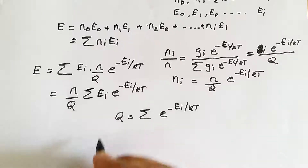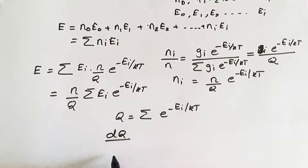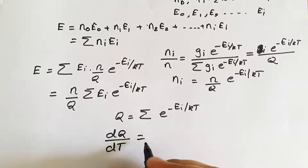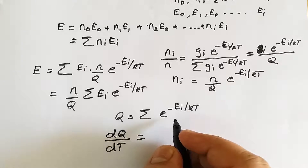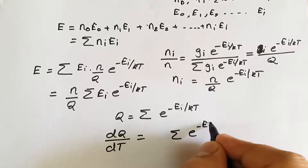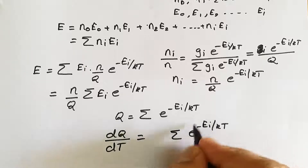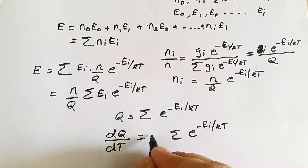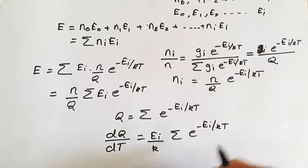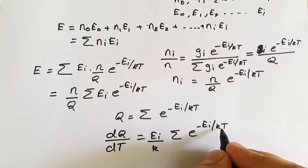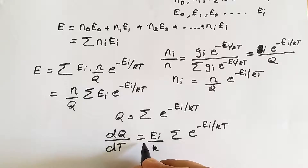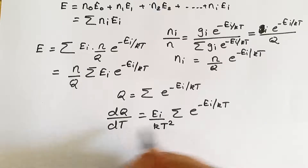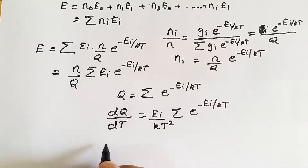Now we differentiate Q with respect to temperature. Differentiating Q = Σe^(−eᵢ/kT) gives dQ/dT = Σe^(−eᵢ/kT) · (eᵢ/k) · (1/T²), since the differentiation of e^x is e^x and the differentiation of 1/T is −1/T². The minus signs cancel, leaving a positive term with 1/T².